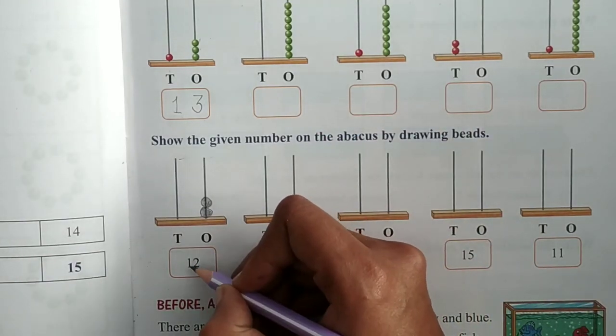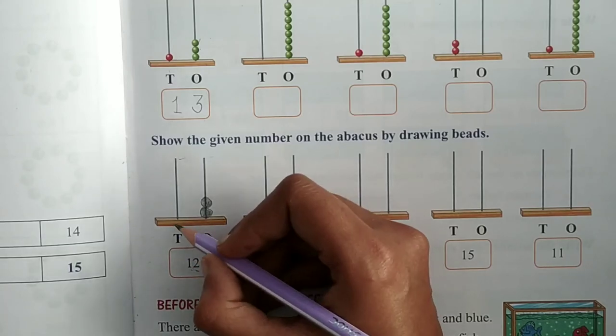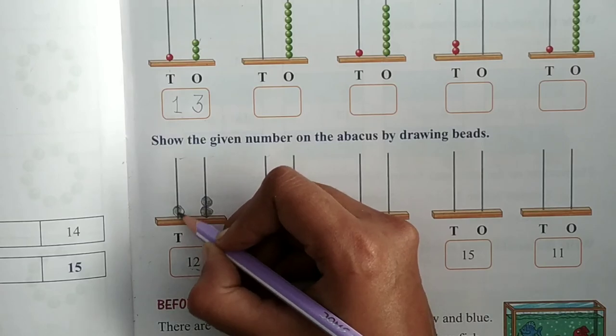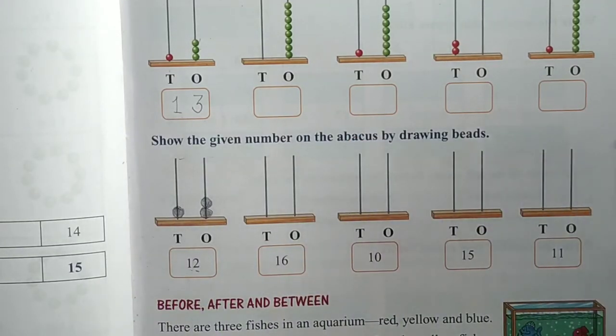Then at tens place there is one. So I will make one bead on the tens place. Fine. So you have to try all the questions like this. And if you have any difficulty, just ask me.